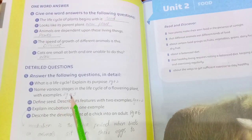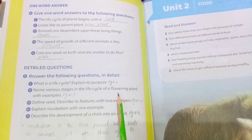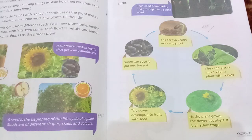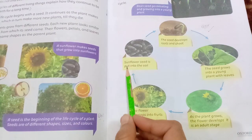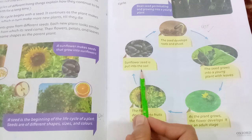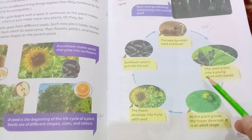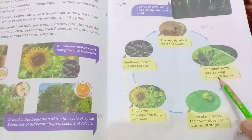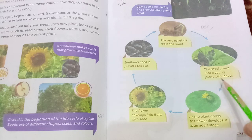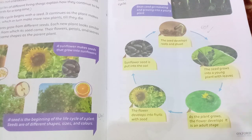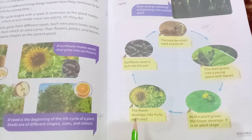Name the various stages in the life cycle of a flowering plant with examples. For example, a sunflower: a seed is put into the soil, the seed develops roots and shoots, then the seed grows into a young plant with leaves, then as the plant grows the flower develops — this is the adult stage — and finally the flower develops into fruits with seeds.